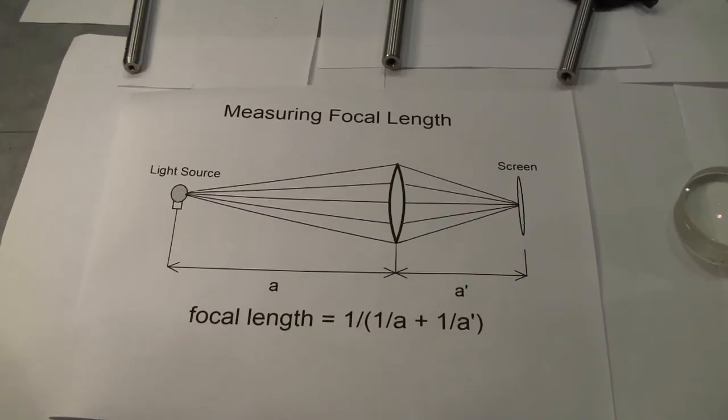So for our objective lens, A in this diagram shown below turns out to be 605 mm and A' would be 525 mm. This gives us a focal length of approximately 281 mm when we plug it into the equation shown below the diagram here.